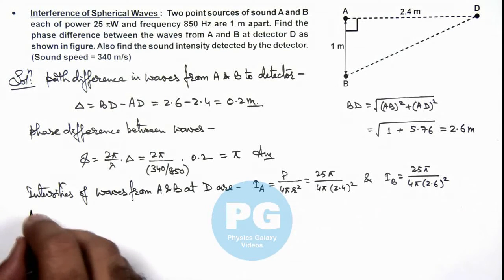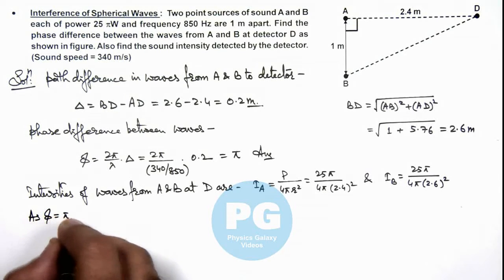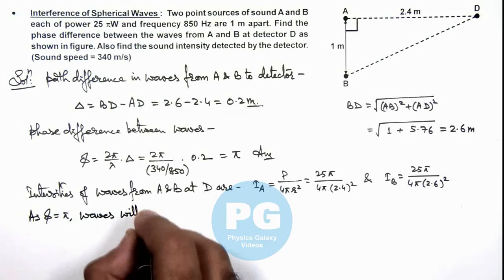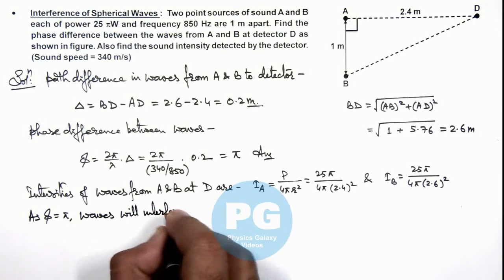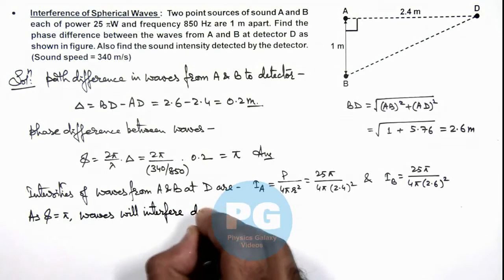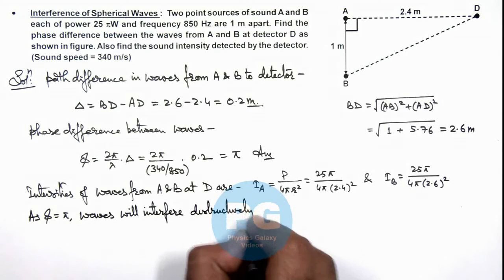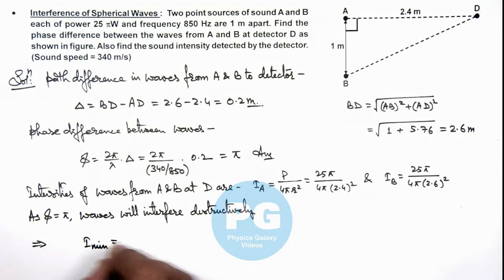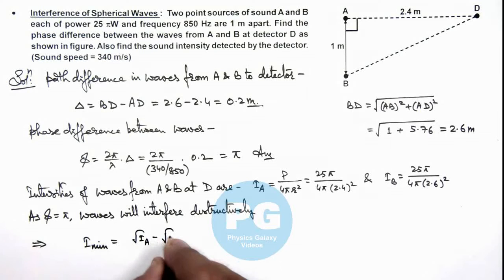We can further write, as φ is equal to π, waves will interfere destructively. This implies intensity will be minimum at detector, which we can write as (√IA - √IB) whole squared.